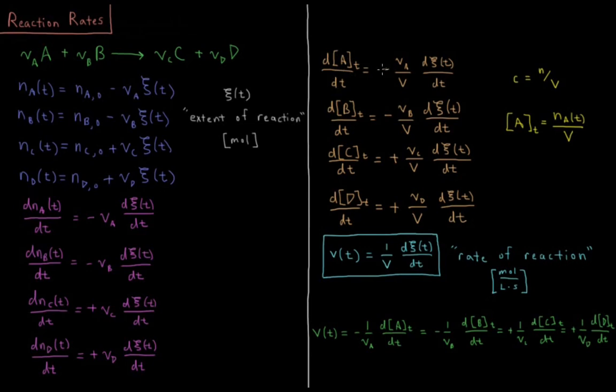So d bracket A dt equals minus nu A over V times d xi dt. Same thing for B, it's a reactant which is consumed, minus its coefficient divided by volume.